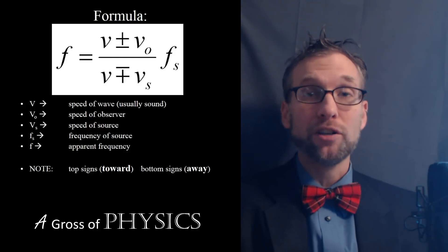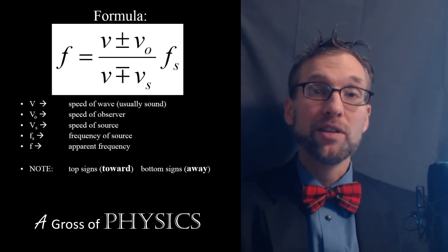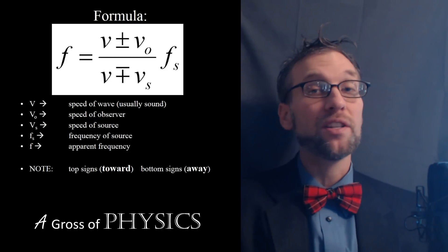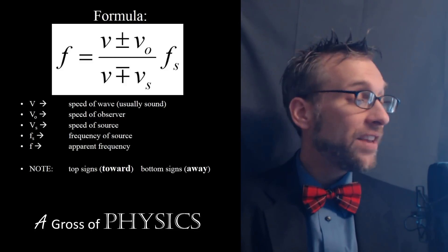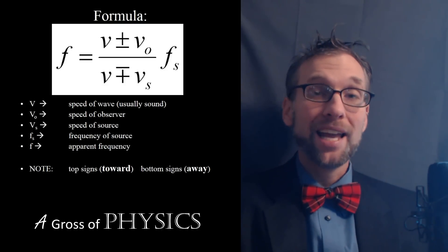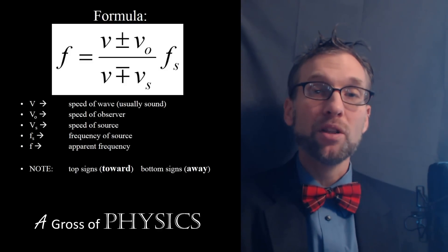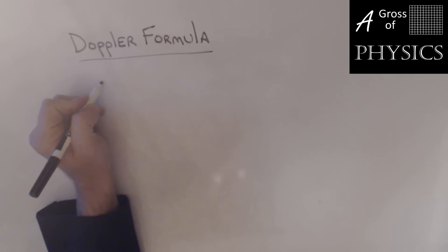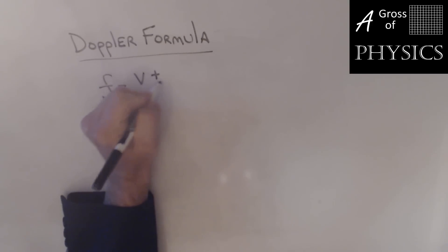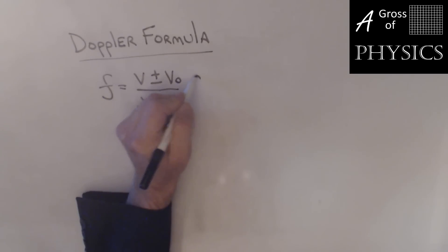The equation changes depending on whether objects are moving closer together or farther apart. For moving toward one another, use the top signs: F equals (V + V₀) over (V − V_S) times F_S. The speeds are in the fraction, and the units cancel, leaving a ratio. If the ratio is above one, the apparent frequency goes up; if under one, it goes down. For objects moving farther apart, use the bottom signs: (V − V₀) over (V + V_S) times F_S.